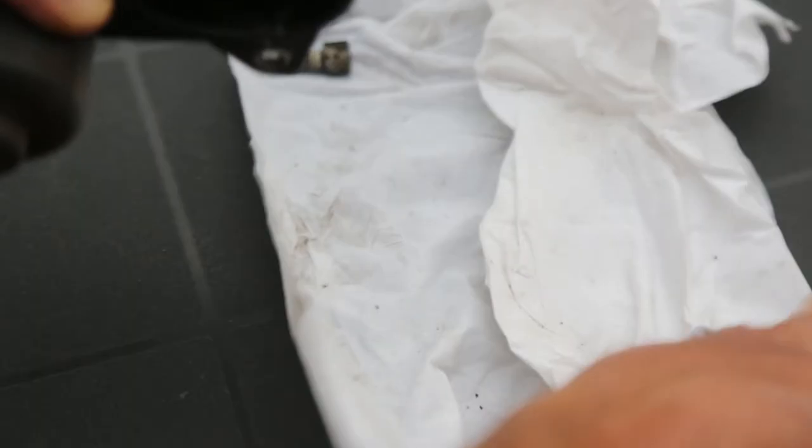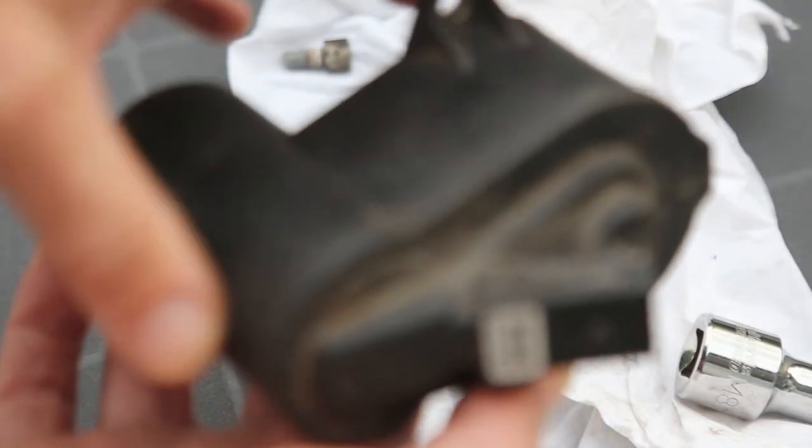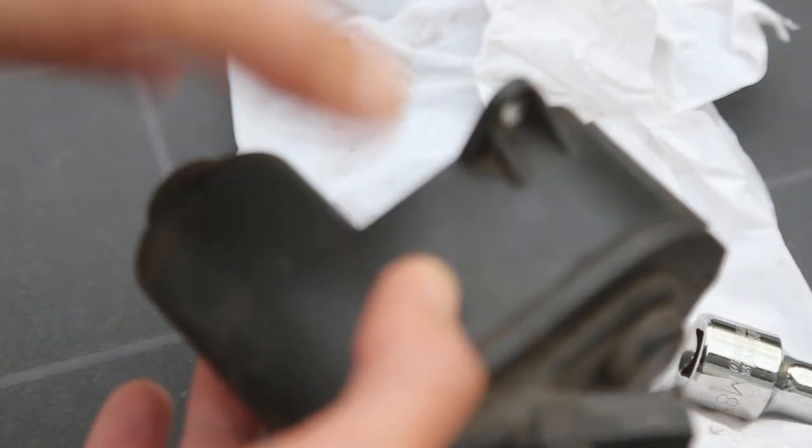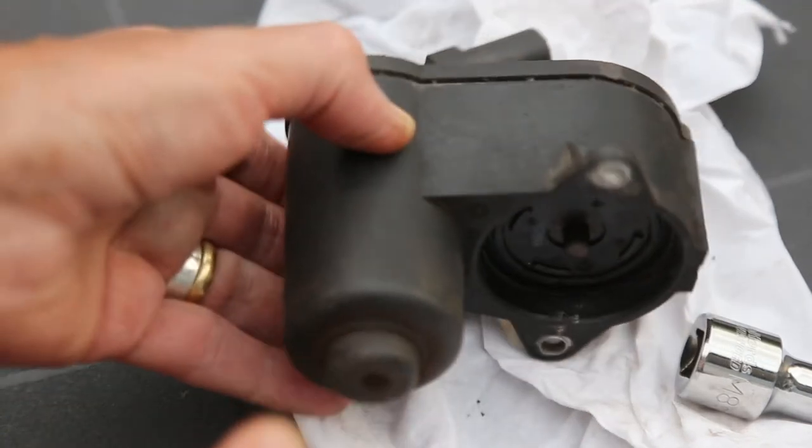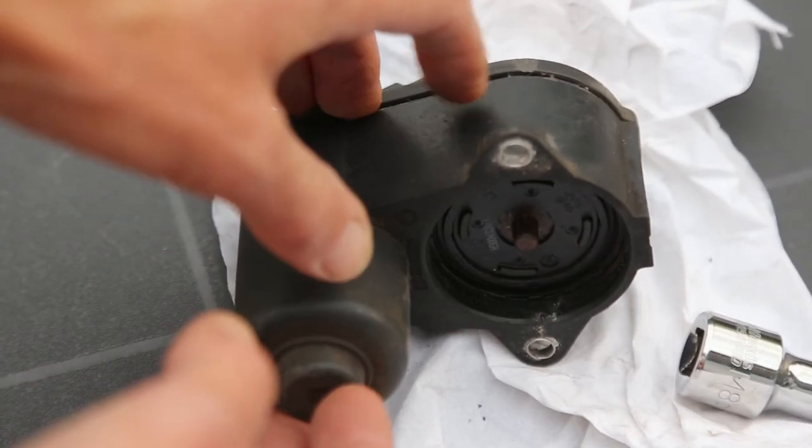So once you've got the motor off, then one option that you have is to either replace the whole caliper and motor as one unit, or as I've done, you can buy a replacement motor and fit that.